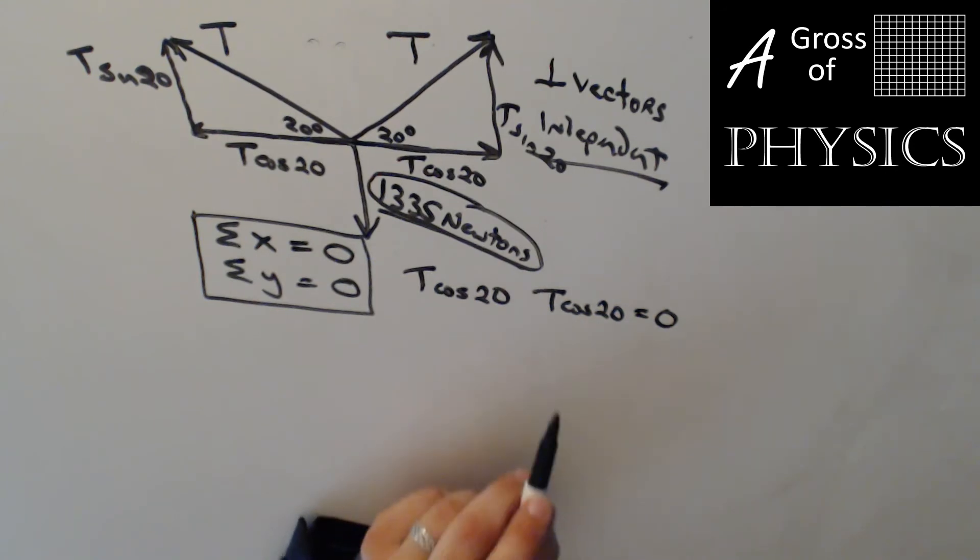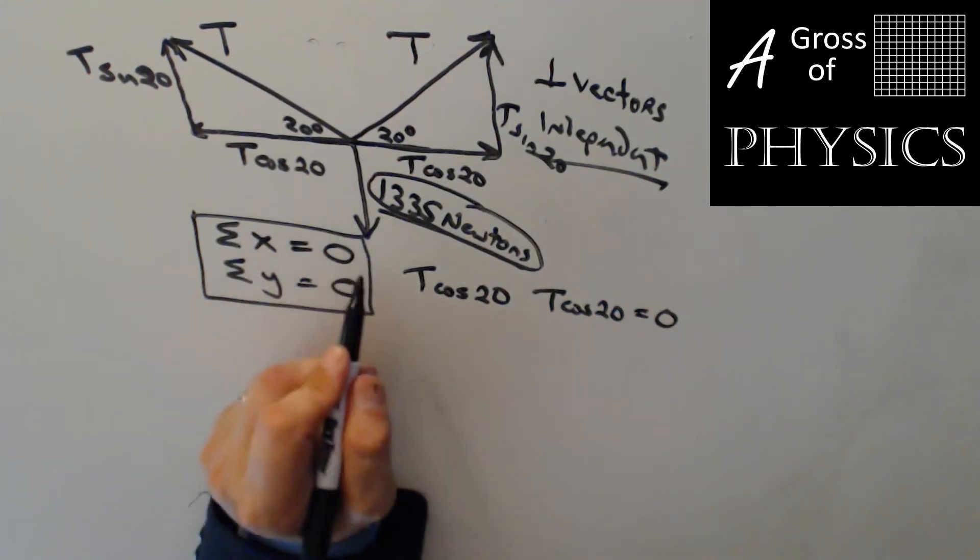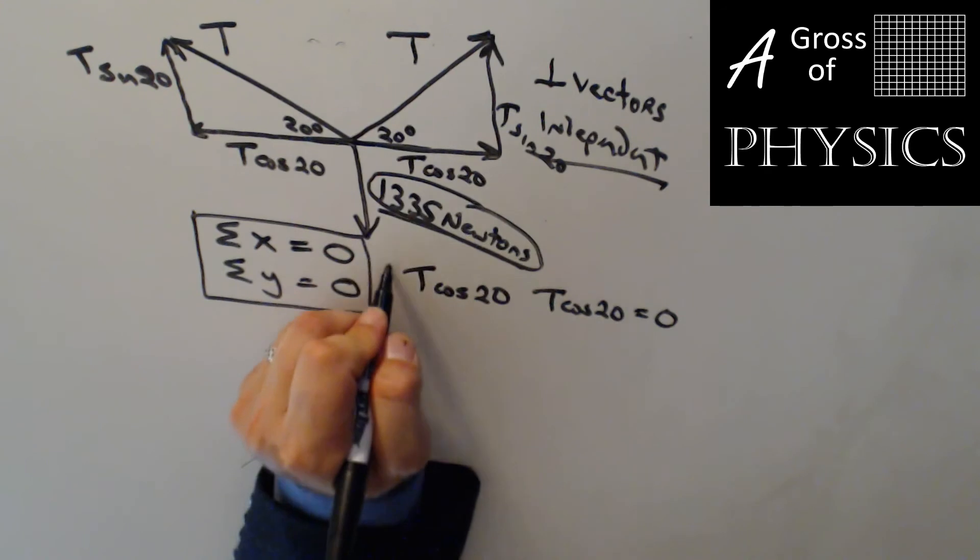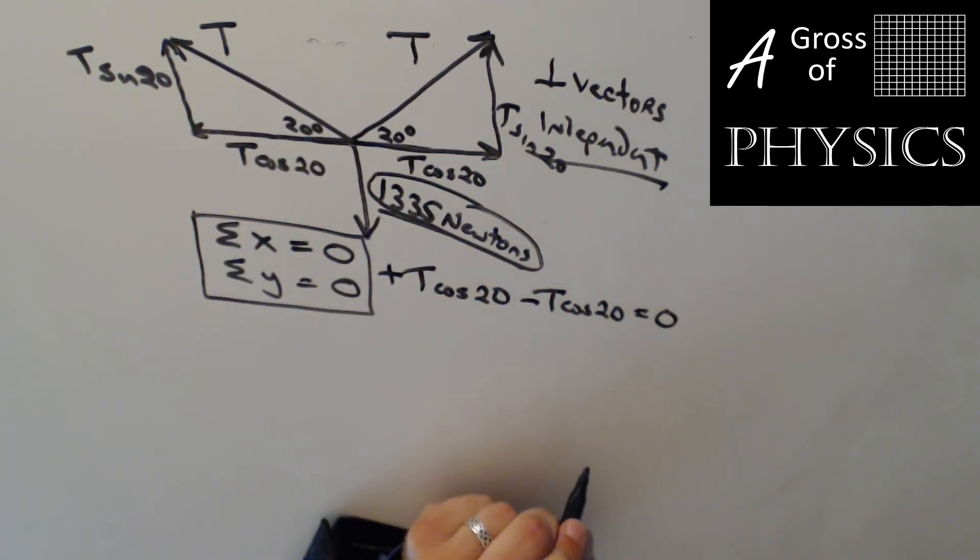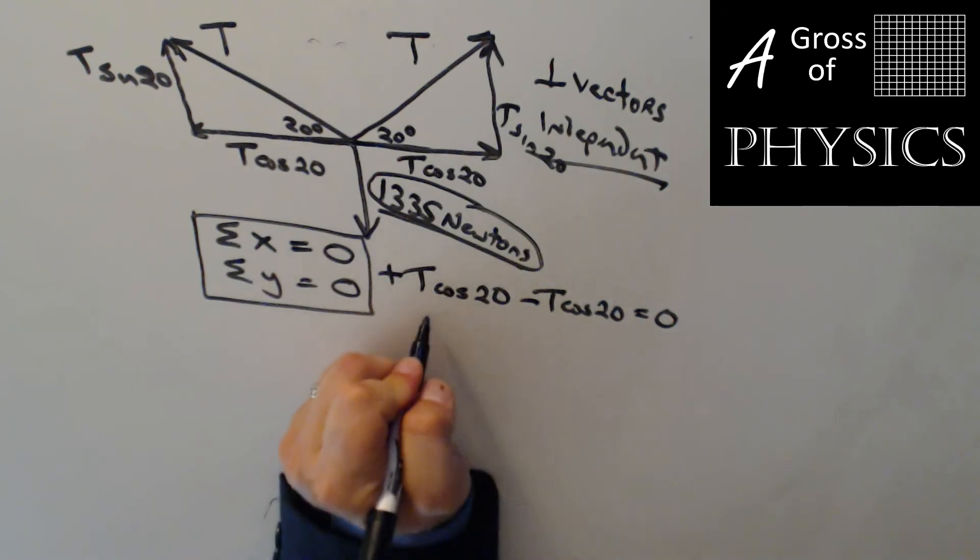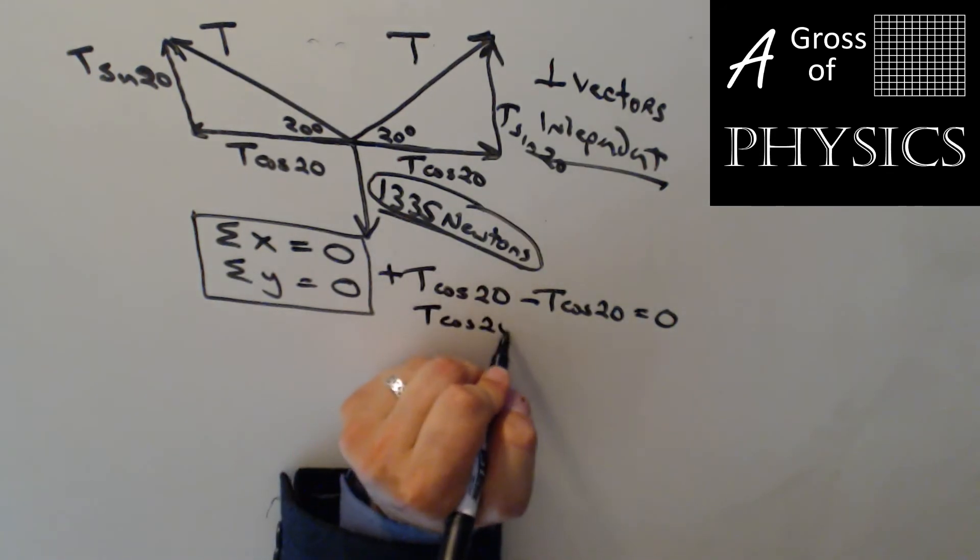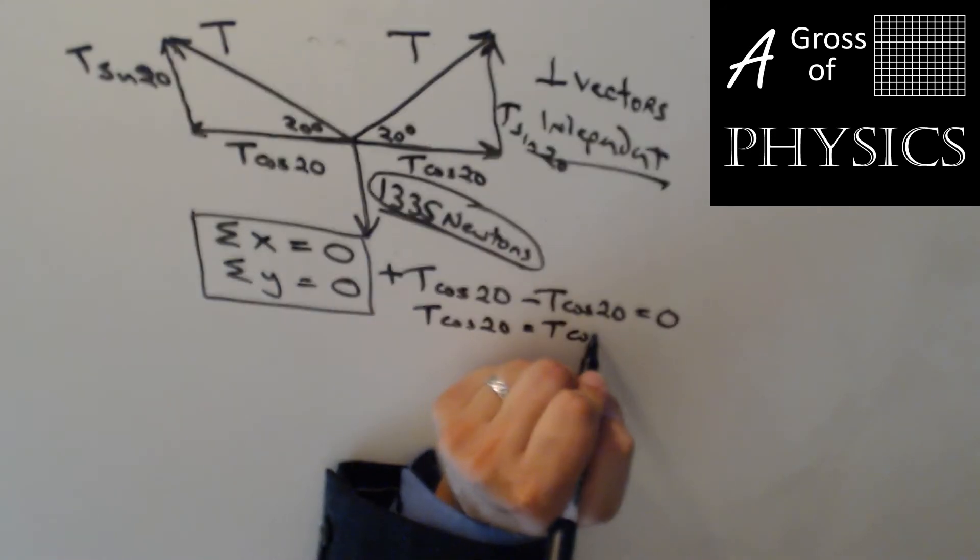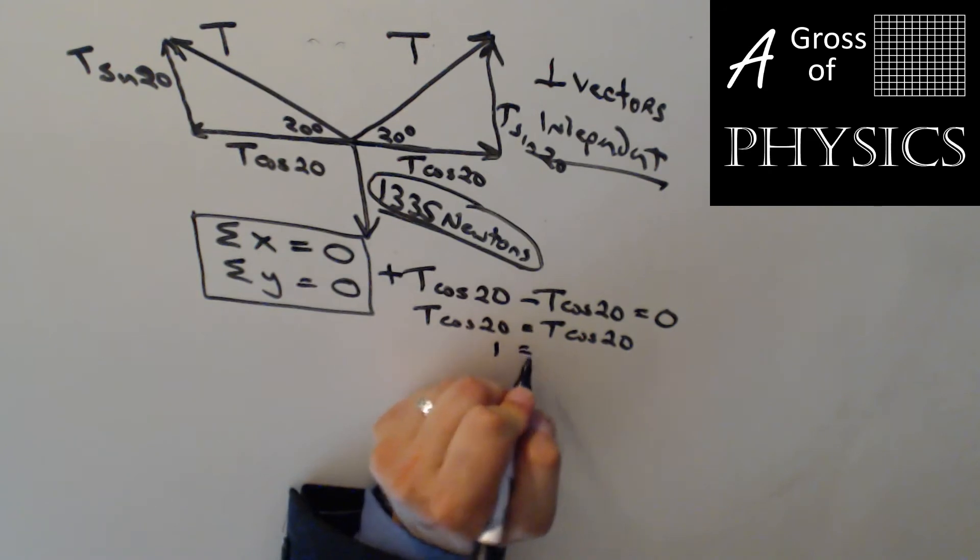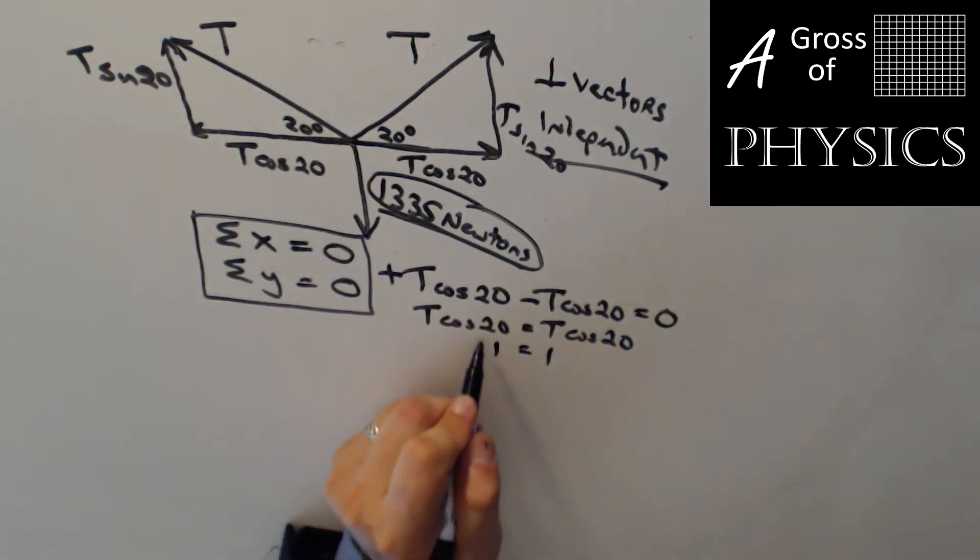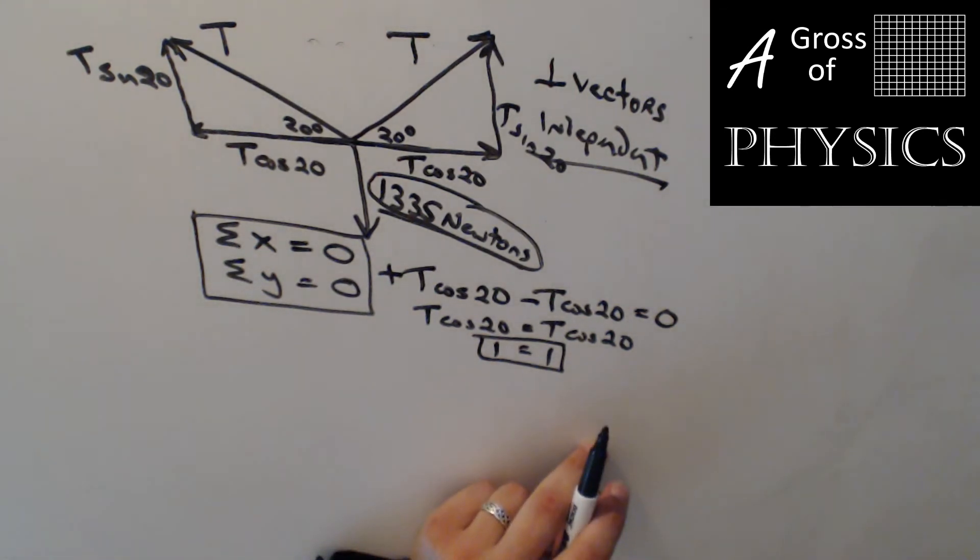But don't forget about the signs because t cosine 20 over here is positive t cosine 20 and the other one is negative. So what this actually says is t cosine 20 equals t cosine 20 and if we divide by t cosine 20 1 equals 1. Well that's wonderful and it's true but it doesn't tell us what t is. So that direction actually doesn't help us.